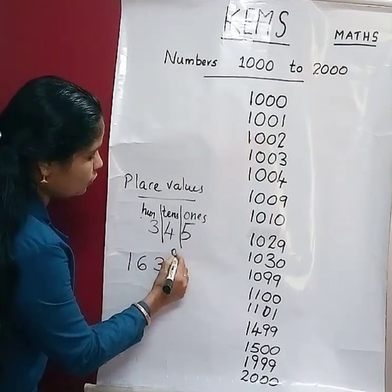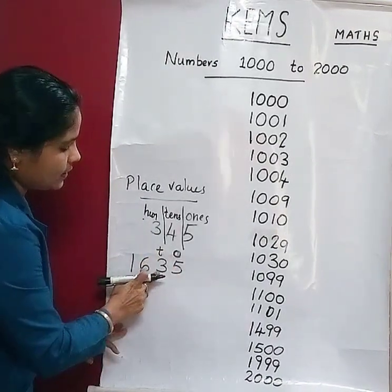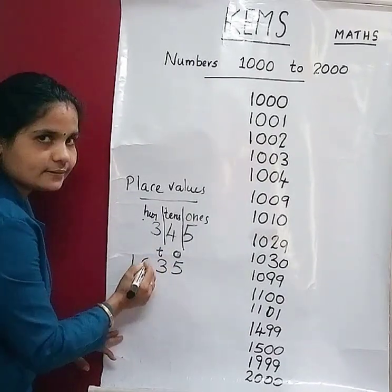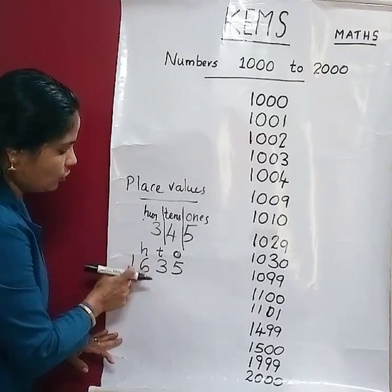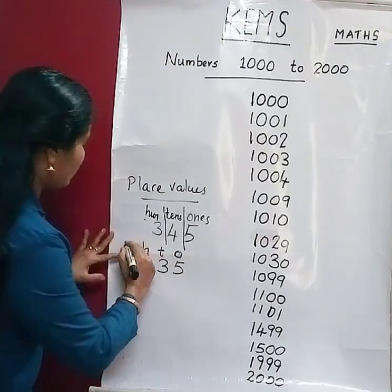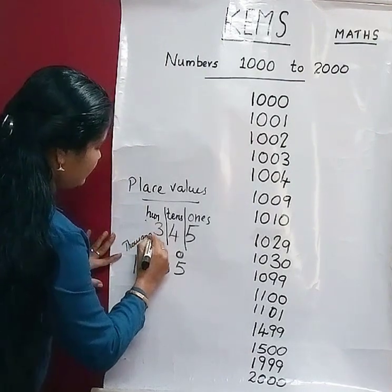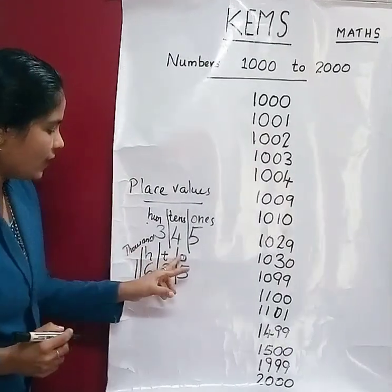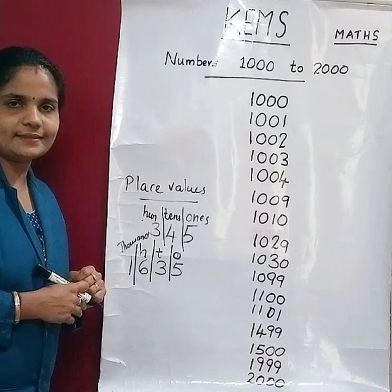So, 1s stands for ones. T stands for 10s. H stands for 100s. And Th stands for 1000s. Clear? 1s, 10s, 100s, 1000s.